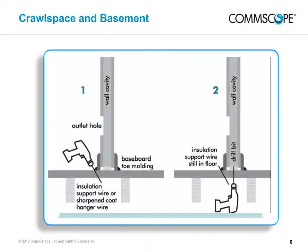With a hung ceiling, you may be able to run the cable on top of it, attaching the cable to floor joists. Otherwise, run the cable around the top edge of the room and then cross to your ceiling entry parallel to the walls. Wire mold can be used to hide the cable.